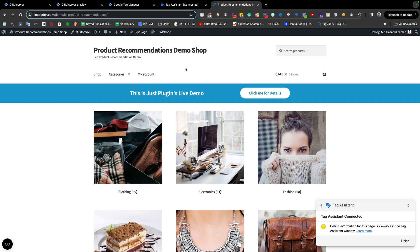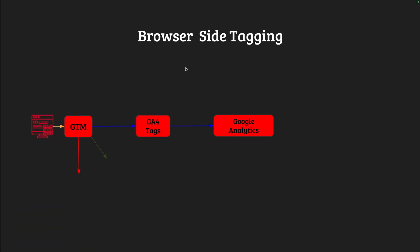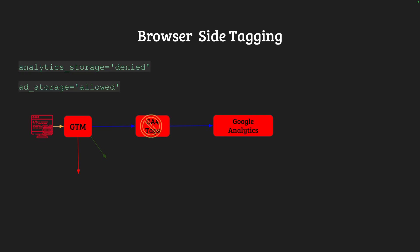But if we think about server-side tagging, there is a problem. If I switch back to my slide, you can see that for browser-side tagging it is perfectly fine. For example, when a visitor gives consent for analytics storage or denies it, or when ad storage is allowed, all GA4-related tags will not be fired but other tags will be fired. For browser-side, everything is sent from the browser GTM, so when a GTM tag is blocked it doesn't matter — other channels are still active.